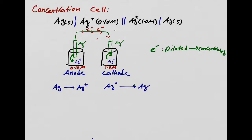The anode concentration keeps going up and the cathode concentration keeps going down until they reach equilibrium. At the anode we lose an electron, and at the cathode that electron is gained. The driving force is the difference in concentration — low concentration gets oxidized, more silver-plus jumps into solution, and on the other side silver-plus is reduced into metal depositing on the electrode.